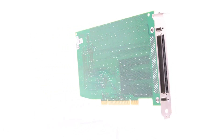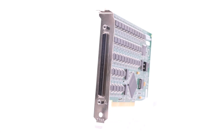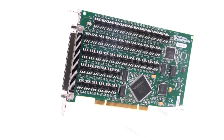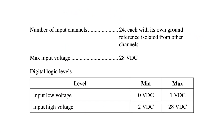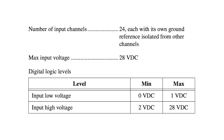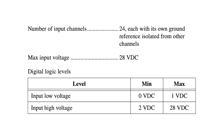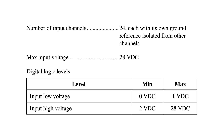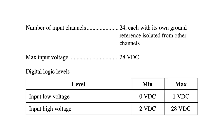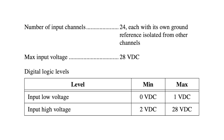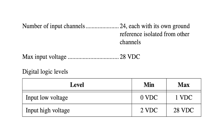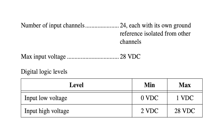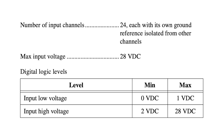This 48-bit device boasts 48 channels capable of acquiring isolated digital data, with 24 solid-state relay output channels and 24 opto-coupled input channels. Each input channel features two differential isolated terminals for signal and reference, supporting logic high with a voltage difference of 2 to 28 VDC and logic low between 0 and 1 volt.